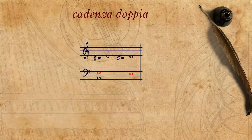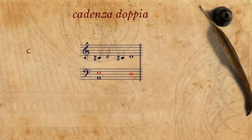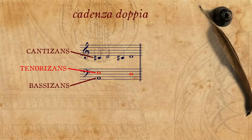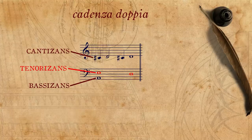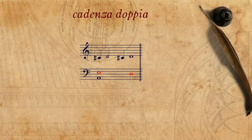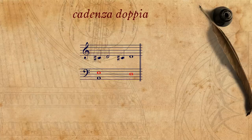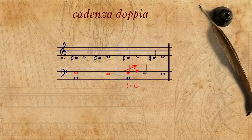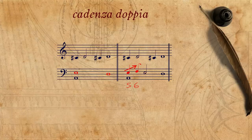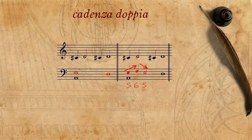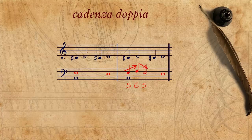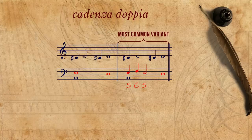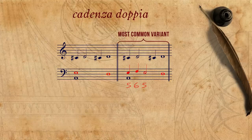To achieve the basic variants of a cadenza doppia, one may vary the tenoritzans clause, and leave the cantizans and basizans as they are. This is how it sounds without any movement in the tenoritzans. In the most common variant, the tenoritzans moves together with the cantizans, ascending to the 6th, and then descending back to the 5th. We will just call this one the most common variant, as we don't want to over-label things unless it's absolutely necessary.